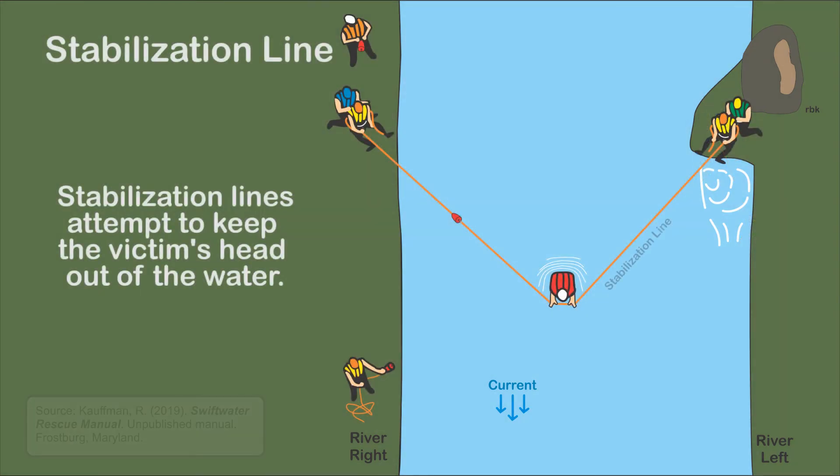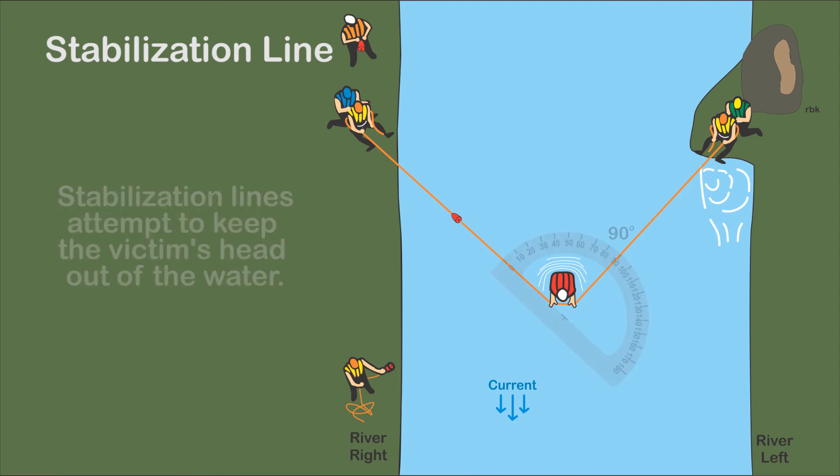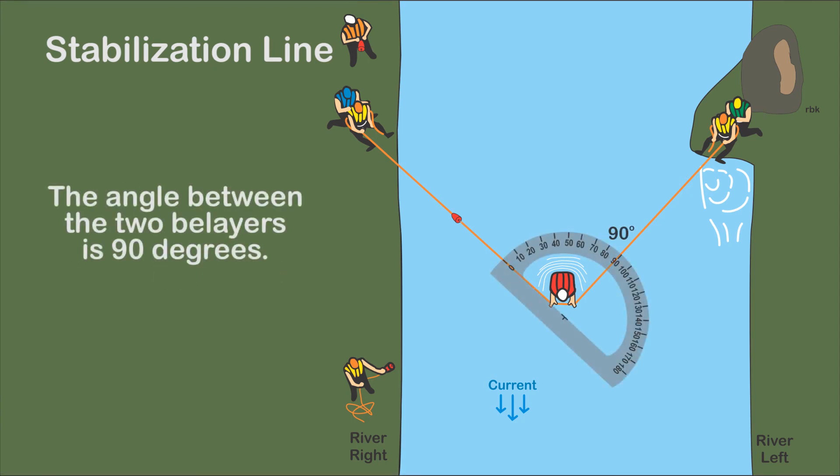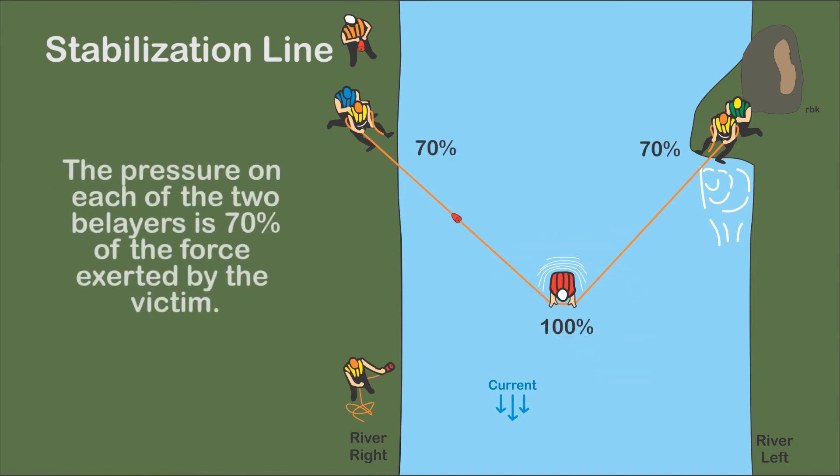A second swift water rescue example is the stabilization line. Its purpose is to provide support to the victim so that they can keep their head above water. These rescuers had the room and rope to create a 90 degree angle. Each belayed rescuer bears 70% of the water's force on the victim.